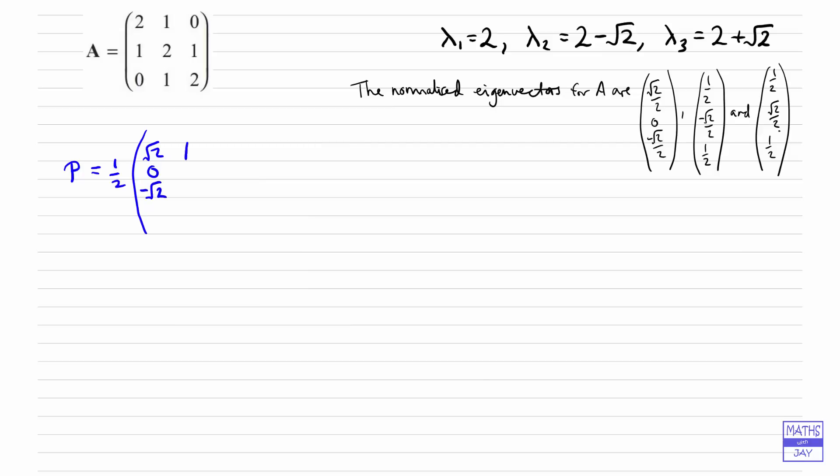Next one, 1, minus root 2 and 1. And the final column, all positives, isn't it? So 1, root 2 and 1. So that's the matrix P.